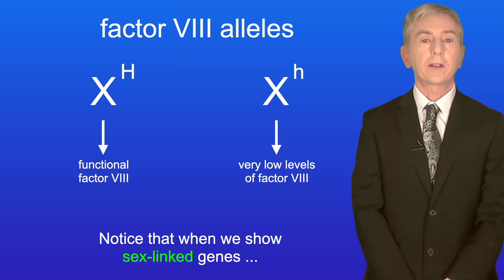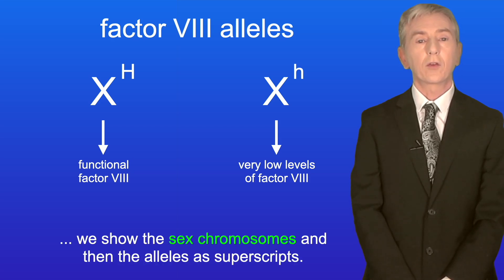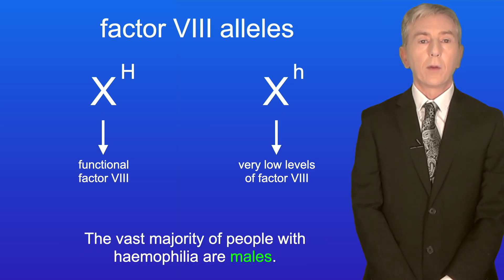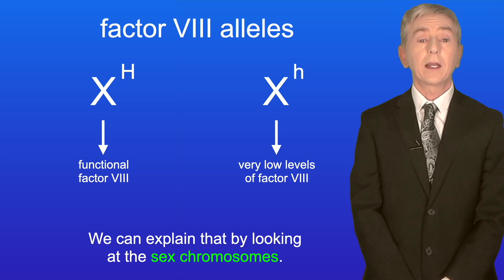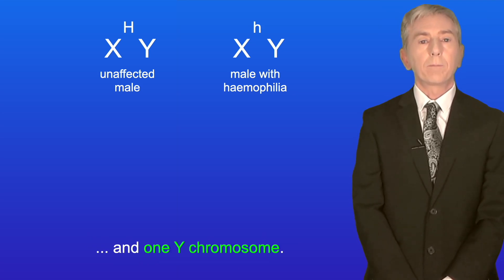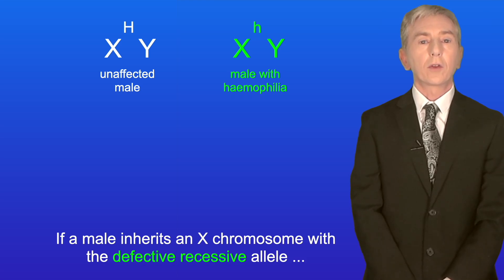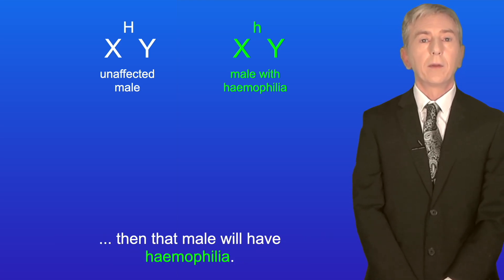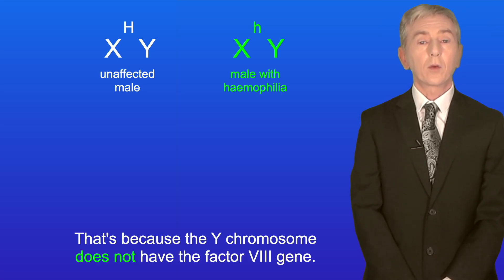Notice that when we show sex-linked genes, we show the sex chromosomes and then the alleles as superscripts. The vast majority of people with haemophilia are males. Males have one X chromosome and one Y chromosome, so if a male inherits an X chromosome with a defective recessive allele, then that male will have haemophilia — because the Y chromosome does not have the factor VIII gene, so the male cannot also inherit the dominant allele for normal factor VIII.